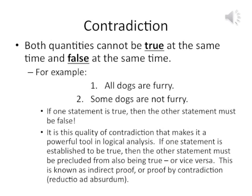Reductio ad absurdum means that if you go through your logical analysis and end up with the contradictory, it reduces the argument to an absurdity and so it cannot be accepted — something has gone wrong with the argument. Contradiction has a flip-flop nature: if one is true, the other can't be; if the other is true, the former can't be.